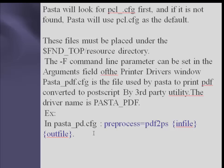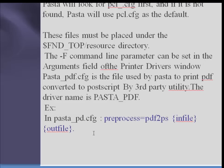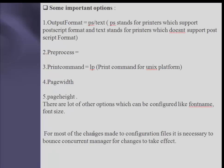In pasta_pdf.cfg, make sure the preprocessor for PDF output is there — for example, x_pdf_preprocessor = pdf2ps. In the PASTA configuration file there are important options: output_format = ps for printers that support PostScript format, and output_format = text for printers that do not support PostScript format.